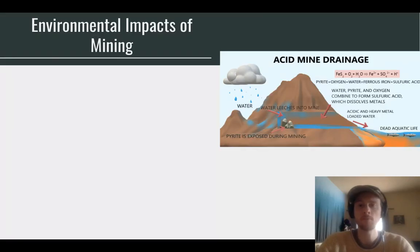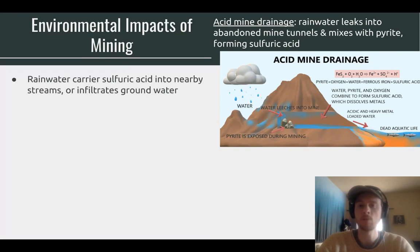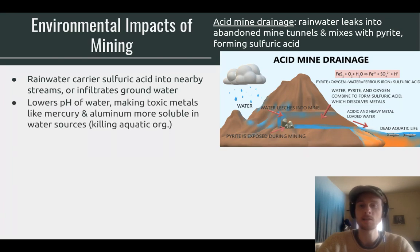A key environmental impact is acid mine drainage. After a mine is abandoned, rainwater leaks into the open shaft and mixes with pyrite — a naturally occurring element exposed by mining. When water mixes with pyrite it forms sulfuric acid, which washes out into nearby rivers, streams, and potentially groundwater. This lowers the pH, making the water more acidic and making toxic metals like mercury, lead, and aluminum more soluble — easily dissolved into the water — which can kill fish and other aquatic organisms.